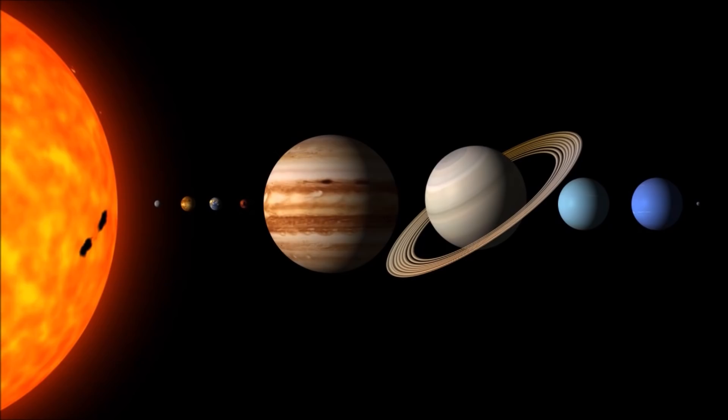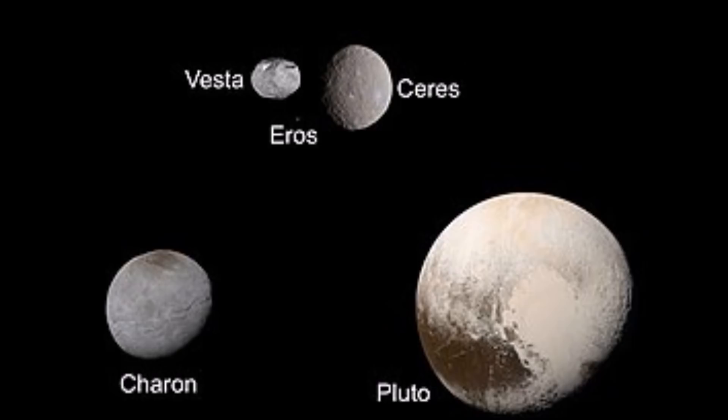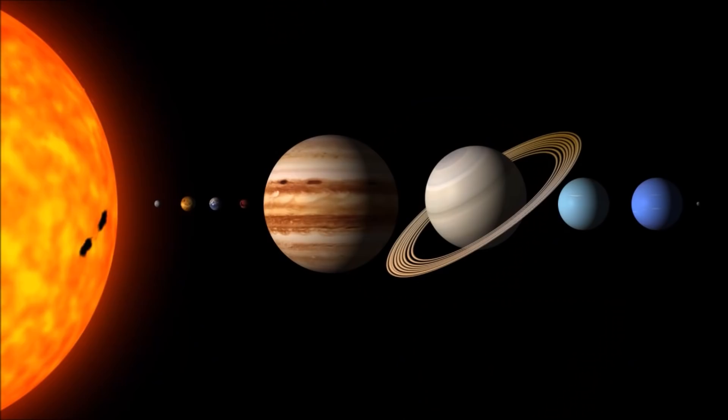Ceres was originally considered a planet for about 50 years before being reclassified by early astronomers in the mid-1850s, after the discovery of other asteroids around it. It is now considered a dwarf planet, or minor planet, or large asteroid. It was actually Ceres and its neighbors that were crucial in the discovery of asteroids.